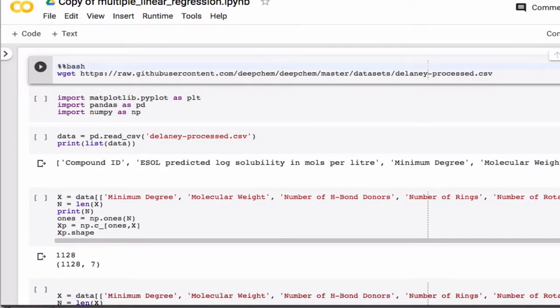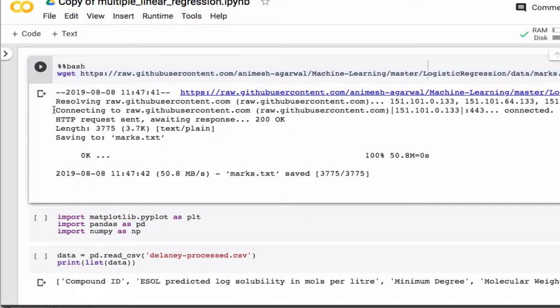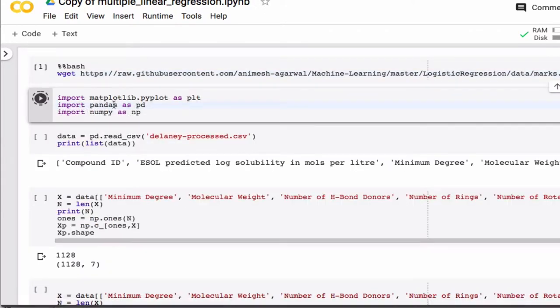Now obviously I'm going to have to get some different data, the data I showed you. So I'll get a file called marks.text. Let's run that. That seems like that worked. Let's get rid of the output. Let's import our libraries. Let's actually look at the file.